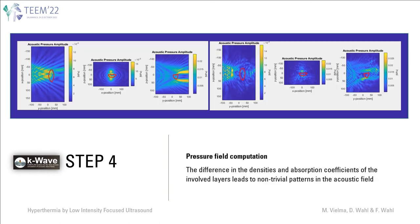Once we have control of the geometries with their corresponding acoustic and thermal properties, we can perform pressure field computation, and this would be our step 4. The left image here shows the acoustic pressure generated by the bowl when directed towards the prostate, represented by the red contours, ignoring the effect of layers other than the prostate. The right image shows the result for the same configuration considering the skin and pelvic bone layers. The difference in the densities and absorption coefficients of the involved layers leads to non-trivial patterns in the acoustic field.